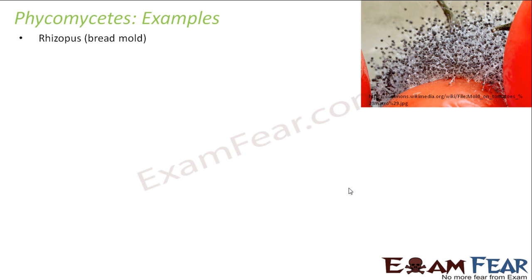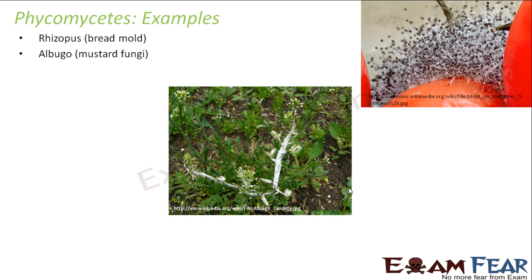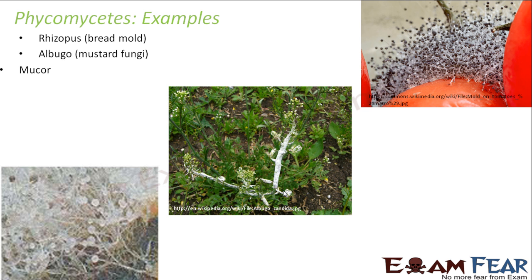Examples of phycomycetes include Rhizopus, the bread mold generally seen on bread, and Albugo, the mustard fungi seen as white-colored structures on mustard plants. The pictures also show thread-like structures with blobs at their terminals, which are characteristic of phycomycetes.